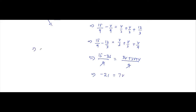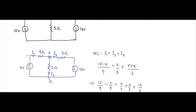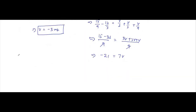That simplifies to minus 21 equals 7V, which gives V equals minus 3 volts. So the node voltage is minus 3 volts. Now we find the currents. I1 equals (15 minus V) divided by 9, which is (15 minus (minus 3)) divided by 9, which is 18 divided by 9, which equals 2 amperes. So I1 equals 2 amperes.